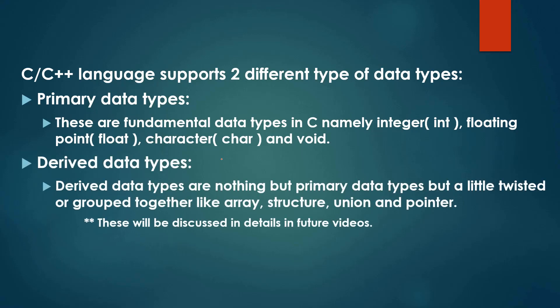And the second data type is the derived data types which are nothing but primary data types but a little twisted or grouped together like arrays, structures, unions and pointers. Those have different capabilities. These will be discussed in the future videos. So let us first concentrate only on the primary data types for now.